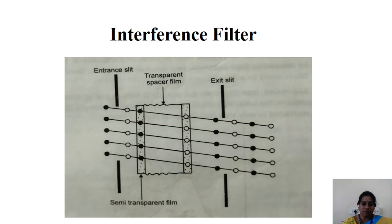And the interference filters can be used with high intensity light sources since they remove unwanted radiation by transmission and reflection rather than by absorption.